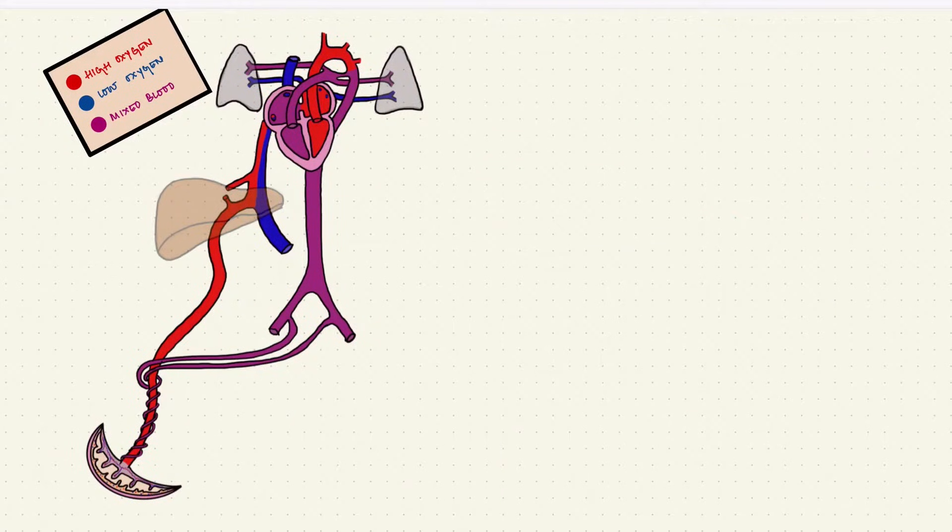Now let's look at the circulatory pathway. So fetal circulation is dependent on shunts. There are three bypass shunts, one at the liver, one at the heart and one at the great vessels.